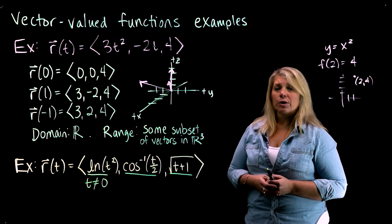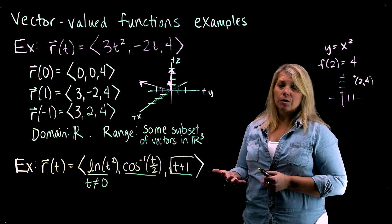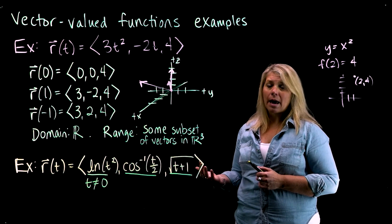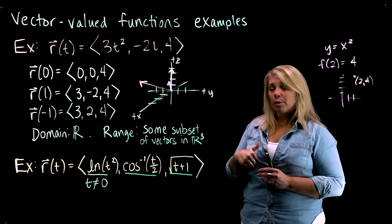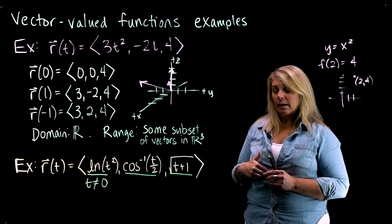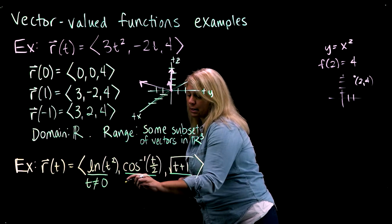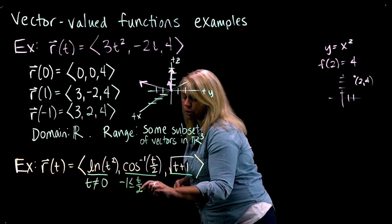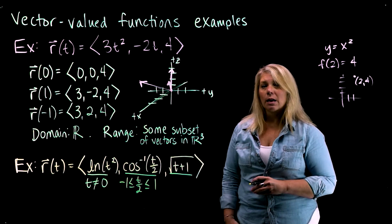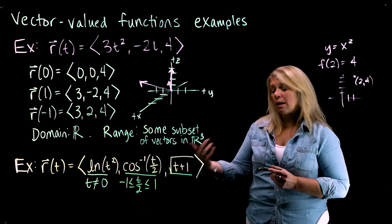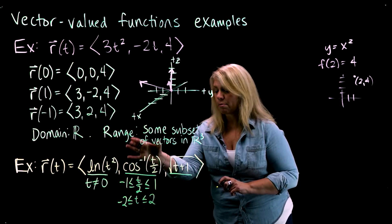Looking at the second component function, this is an inverse trig function — specifically cosine inverse. The outputs of the cosine function are between negative 1 and 1, which means the inputs for cosine inverse must be between negative 1 and 1. The input here is t over 2, so I set up the inequality negative 1 ≤ t/2 ≤ 1, and solving for t gives t values between negative 2 and 2. So that restriction comes from the second component function.